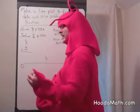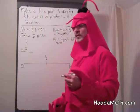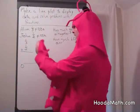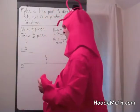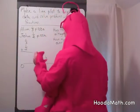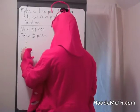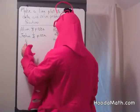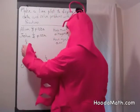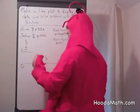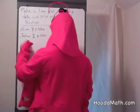But we can't add them because they have different denominators, so we have to get a common denominator. The common denominator is the product of 3 and 2, which is 6.